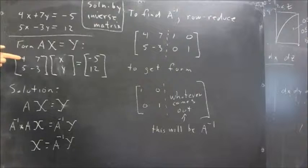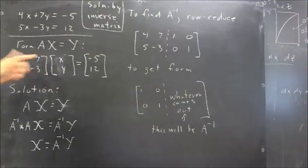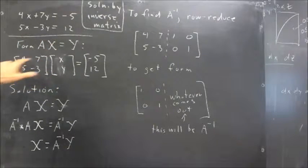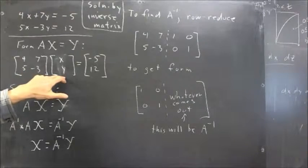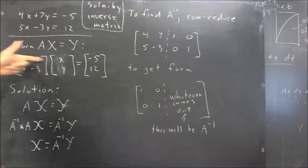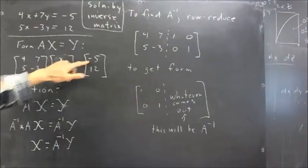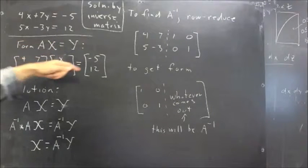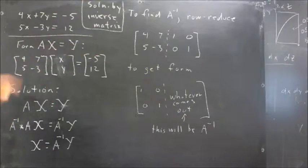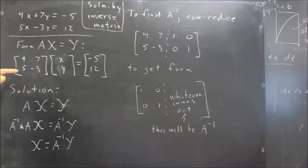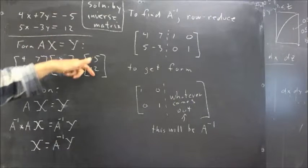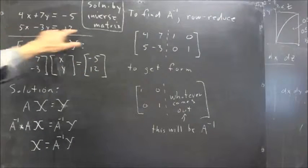This row times this column, and this row times this column, is 4 times X plus 7 times Y, equal to the corresponding number. First row times the column gives us the first number, that's our first equation. Second row times the column gives us our second number, that's the second equation.